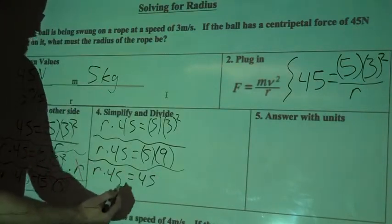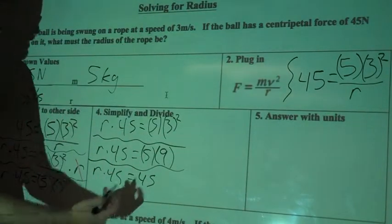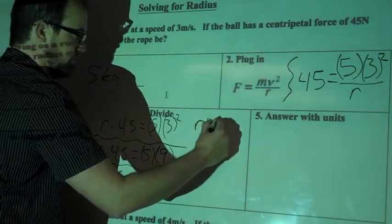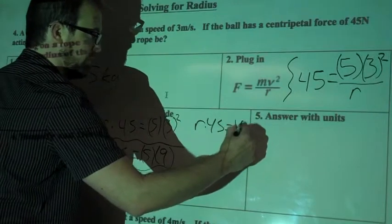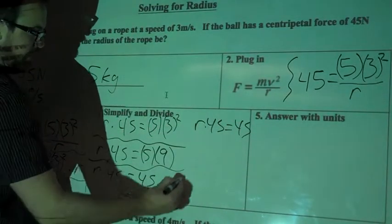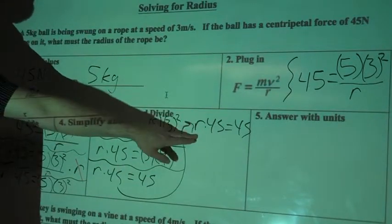And then I'm going to bring everything over here up to the top so I've got some room to work out what R is, and I'm sure you've already figured it out. So R times 45 equals 45. So I just copied everything from down here, brought it up here. I know I want to get R by itself.